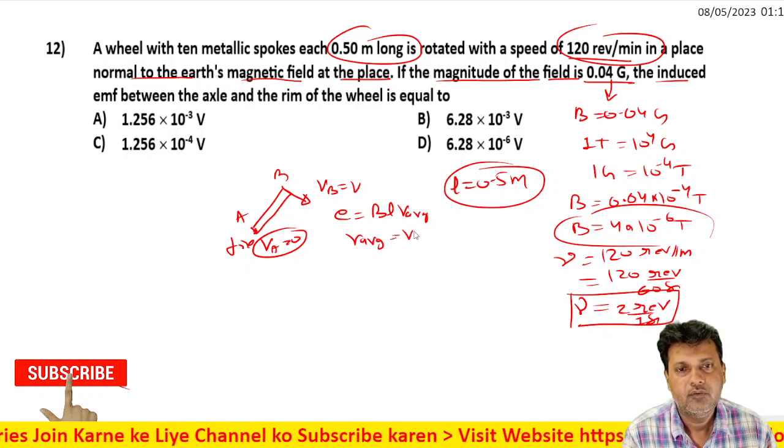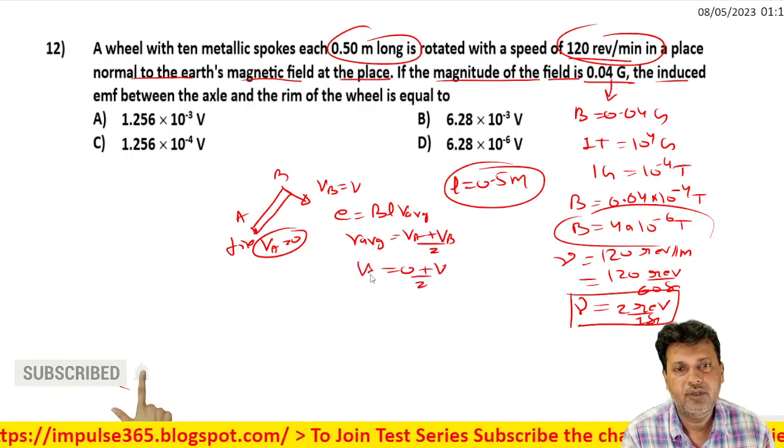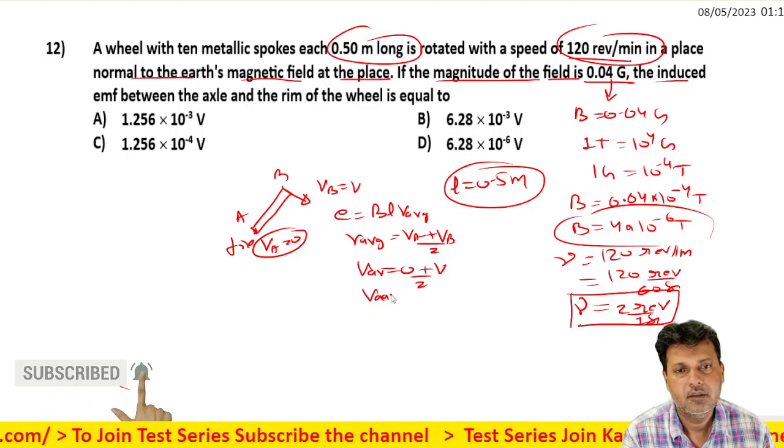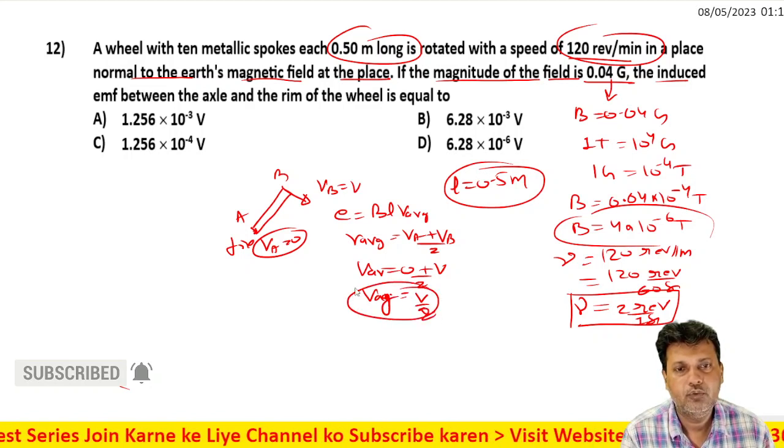The EMF is V_B and V_A, and V_average equals V_A plus V_B by 2, which is 0 plus V by 2. So V_average equals V by 2.